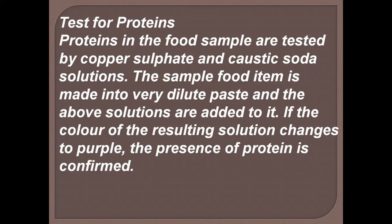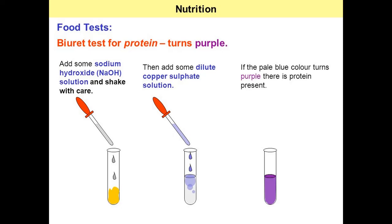Test for proteins: proteins in the food sample are tested by copper sulfate and caustic soda solution. First, take the food sample in a test tube. Add a few drops of sodium hydroxide solution and shake with care. Then add copper sulfate solution to the same mixture. If the content turns purple — if the pale blue color turns to purple — it indicates that protein is present in the food sample.